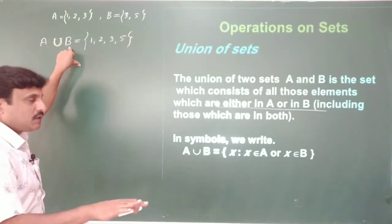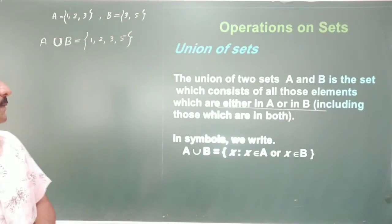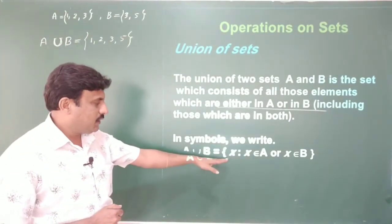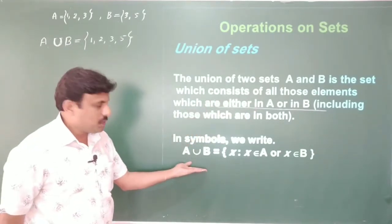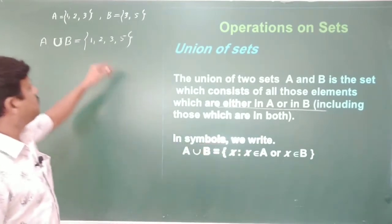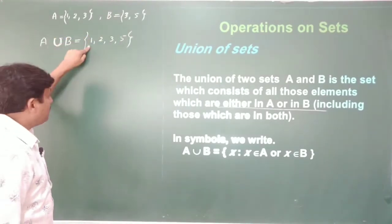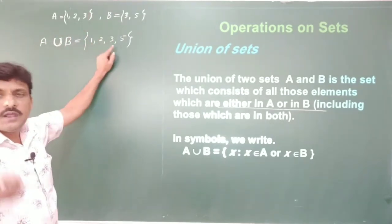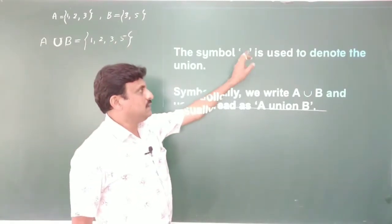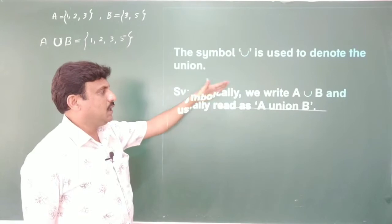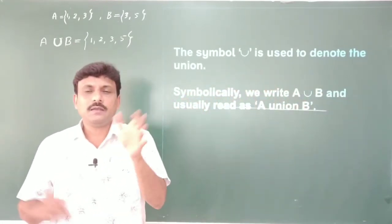A union B is also a set which contains the elements either in A or in B. In symbols we write: A ∪ B = {x : x ∈ A or x ∈ B}. The symbol ∪ is used to denote the union. A union B means all elements of both sets, avoiding repetition.